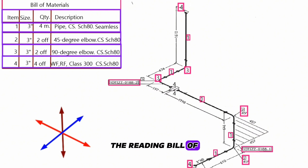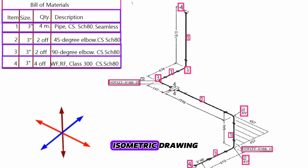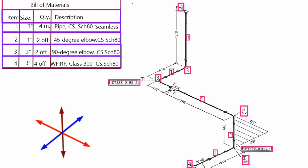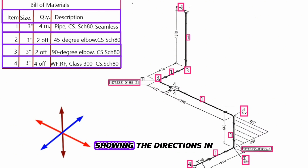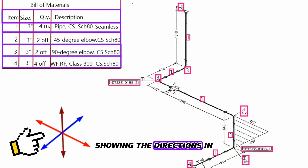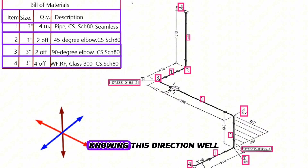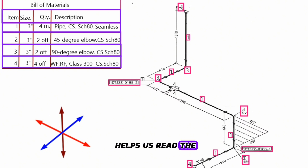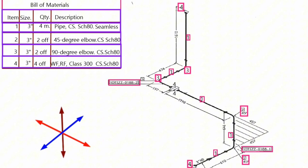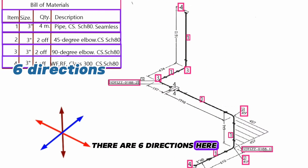The reading of the bill of materials in this piping isometric drawing is successfully completed. Now let's learn the arrows showing the directions in the piping isometric drawing. Knowing these directions well helps us read the piping drawings. There are six directions here.